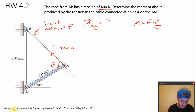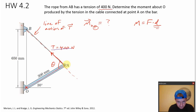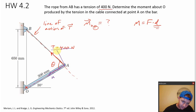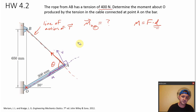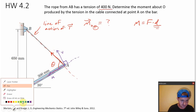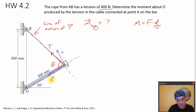So let's think about Varignon's theorem. Varignon's theorem says let's take the force vector and divide it into two components. Let's say one axis is coming along the bar OA — we'll call that the U direction — and then a direction perpendicular to the bar OA, which we'll call the V direction.